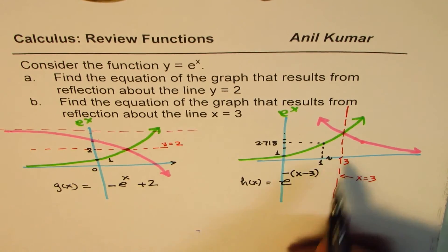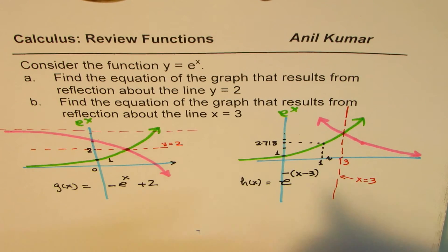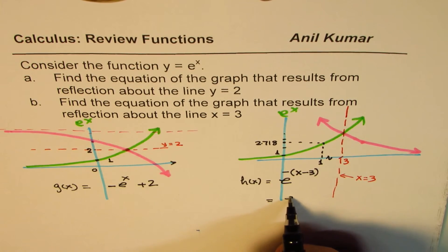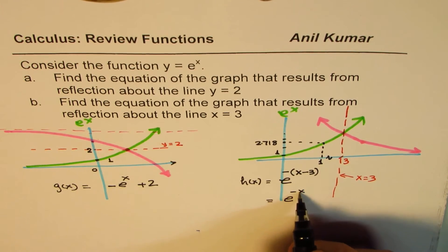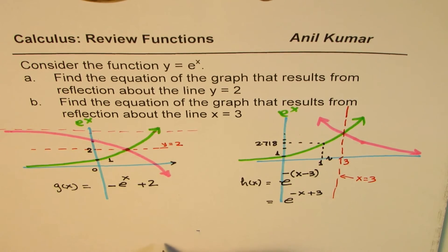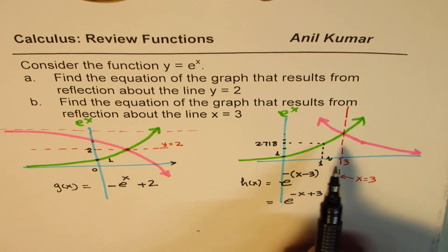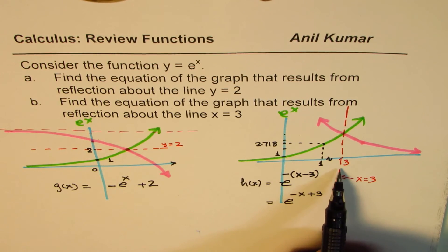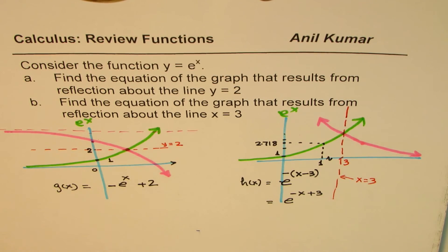Do you see that? That is how this equation should be written. You could also write this as e to the power of minus x plus 3. Do you see that? So that becomes the equation of the graph, which is reflected on the line x equals 3.